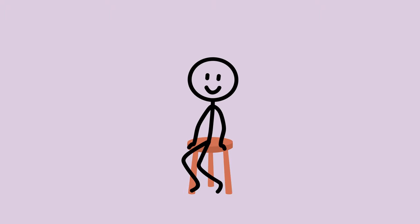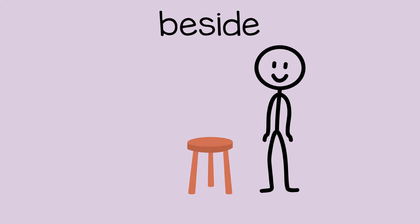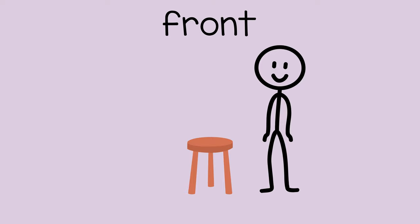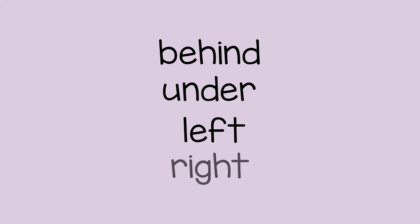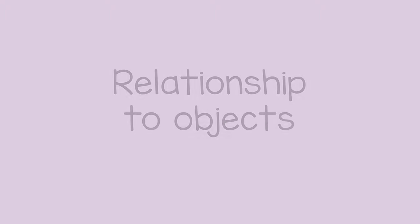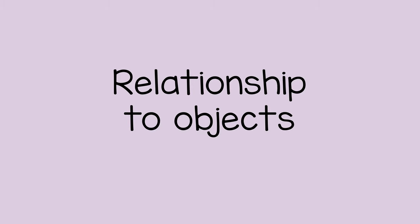Then you might say, now stand beside the stool, or stand in front of the stool. You can continue to ask them to move to different positions, like behind, under, to the left, or to the right. This game helps a child understand their relationship to objects around them.